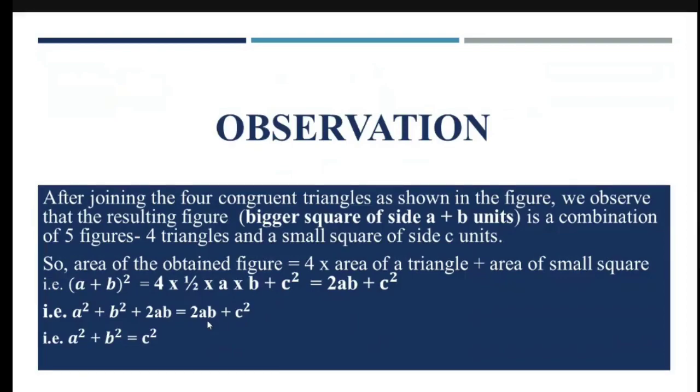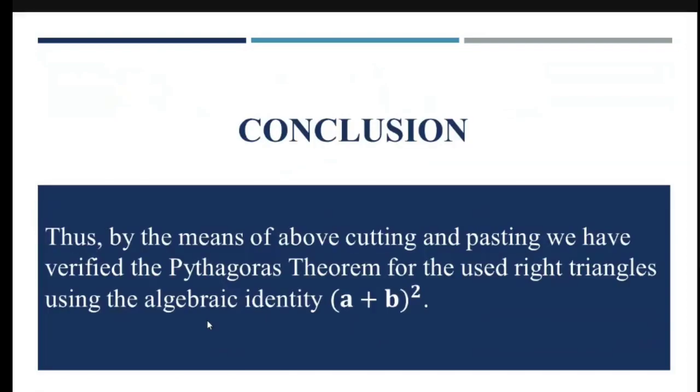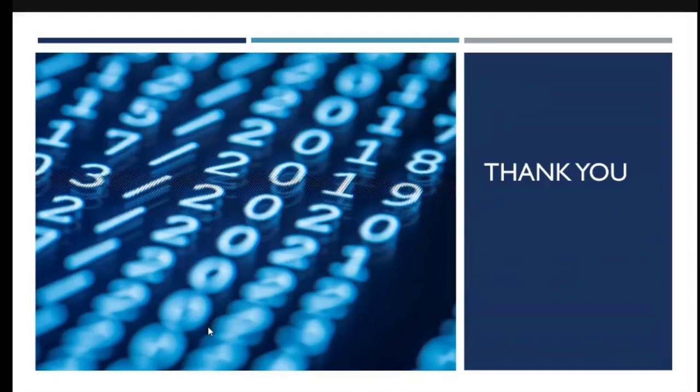Try recalling, was this not what I wanted to prove? Yes. So I have verified the Pythagoras theorem by means of above cutting and pasting, that the Pythagoras theorem holds true for right triangles using the identity (A + B)². I hope it is very clear to you. Just watch the video again in case you have not followed. Thank you so much.